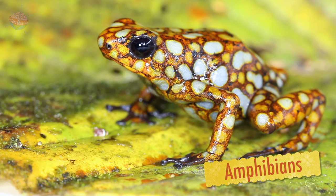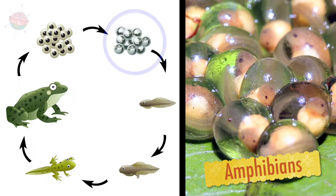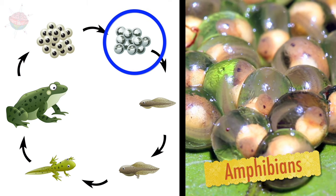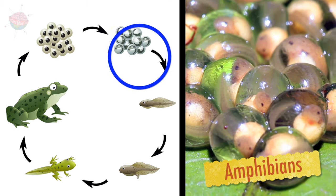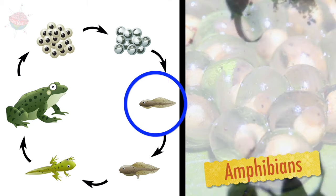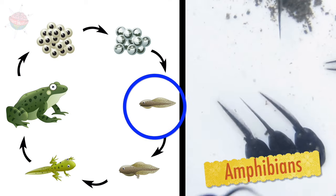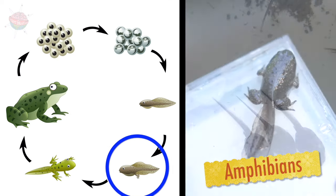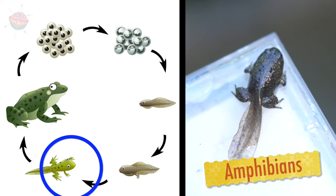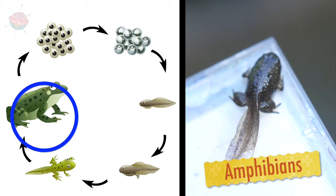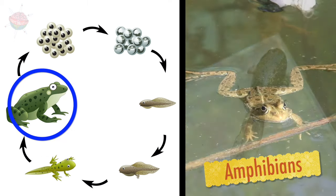All amphibians begin life in water as an egg. They grow into larva, such as a tadpole. They then develop gills as a young amphibian, and reach adulthood when they can reproduce.